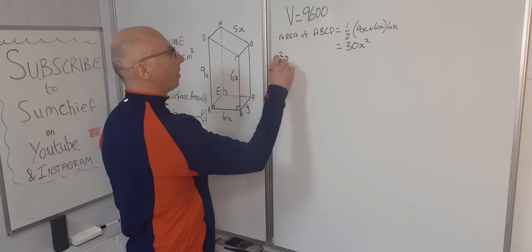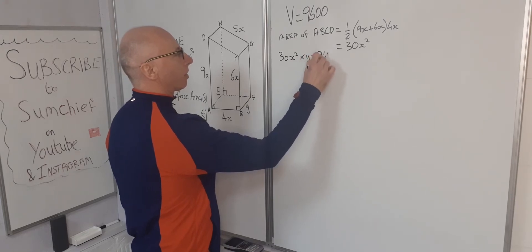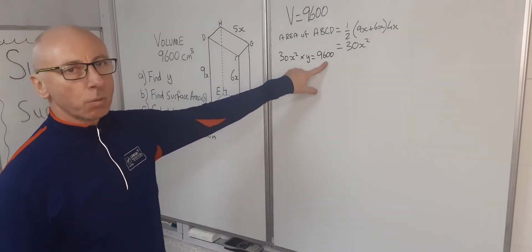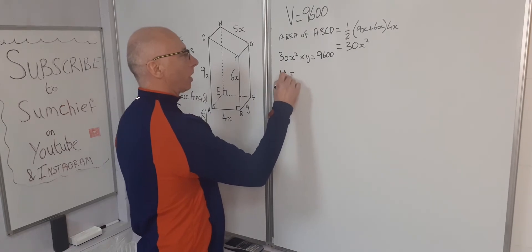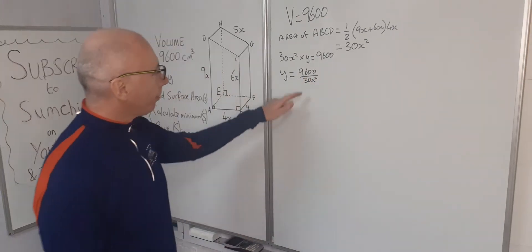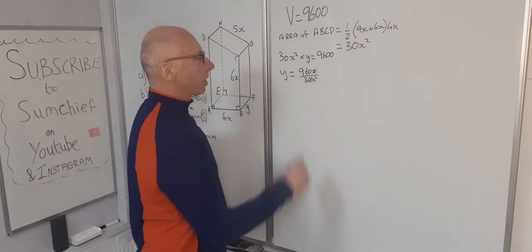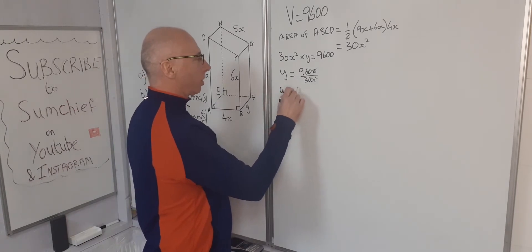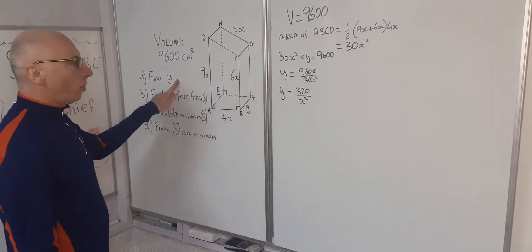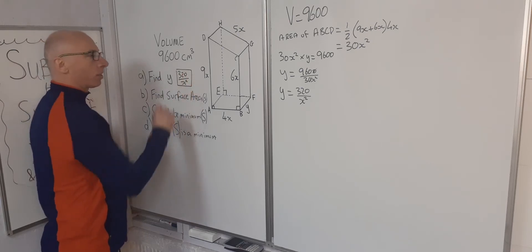So 30x squared multiplied by y equals 9600. To get y on its own, we divide both sides by 30x squared. That gives y equals 9600 divided by 30x squared. Cancelling, 9600 divided by 30 gives 320, so y equals 320 over x squared. That's our answer for part A.